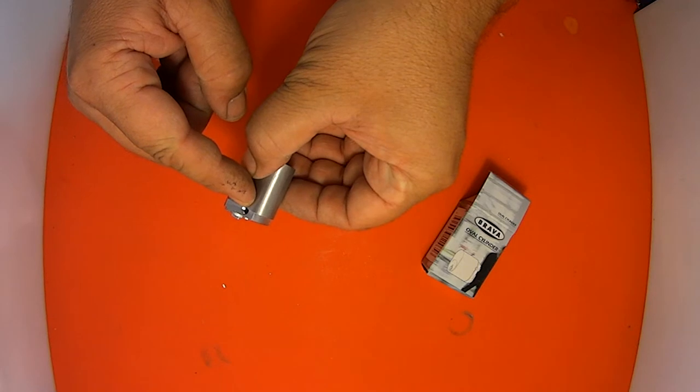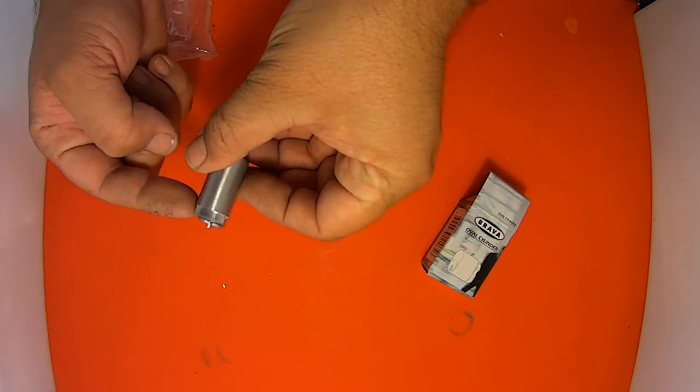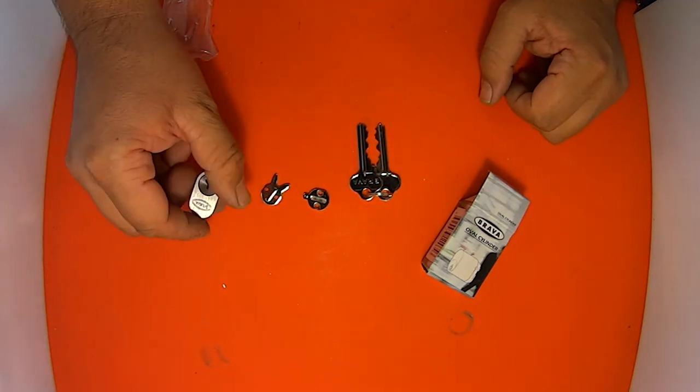The retainer hole is right there. So once you put it in your lock, you just tighten up the retainer and that will hold your new barrel in place.